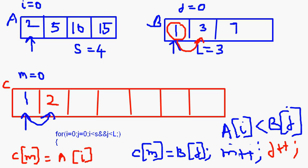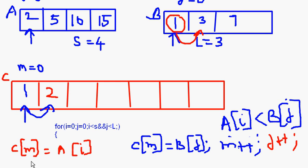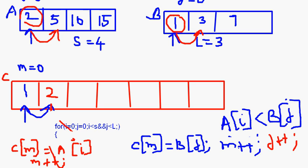m++ is done in all cases since we always move to the next position in array C. When putting an element from array A, we do m++ and i++; when putting an element from array B, we do m++ and j++. Continuing: i points to 5, j points to 3 — 5 vs 3, three is less so 3 is put into C, j++. Next: 5 vs 7 — five is less so 5 is put into C, i++.